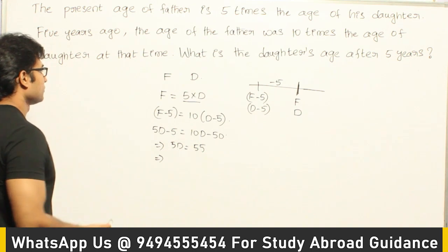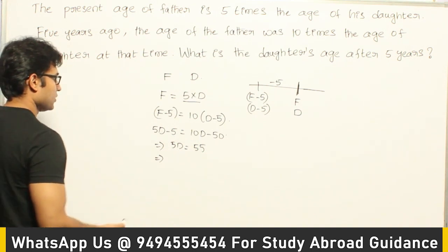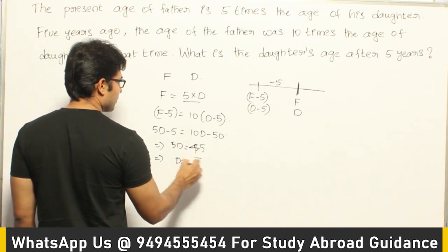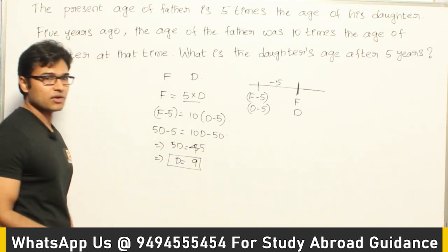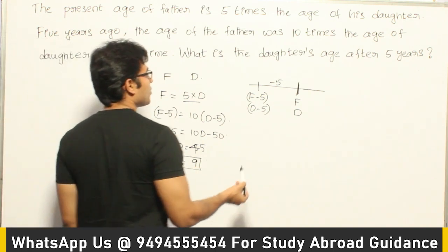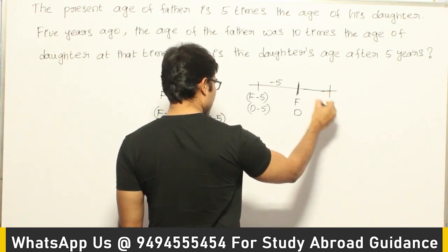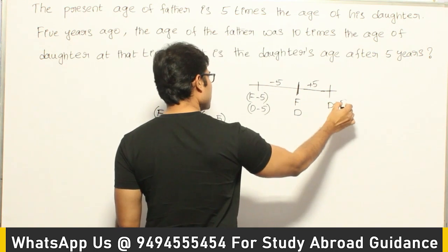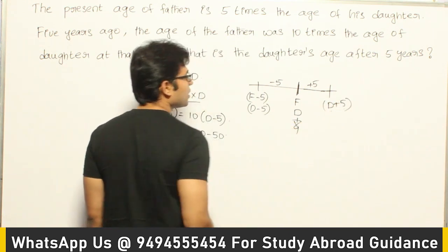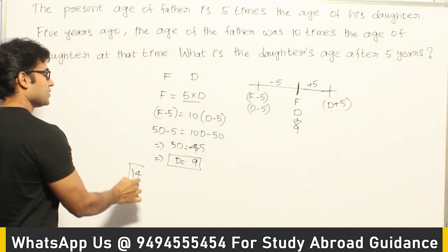So we get 5D = 45, which means D = 9. The daughter's current age is 9 years. But they are asking what is the daughter's age after 5 years, which means D plus 5. So if the daughter's age is 9 now, after 5 years it is going to be 14. So 14 is the answer.